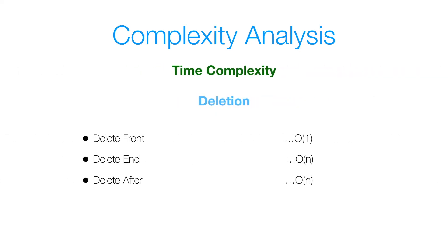For time complexity of deletion: deleting at the front is constant time — we just have head reference the next node. Deleting at the end requires traversing the entire list, so that's linear time. Deleting after a given node is also linear time in the worst case. For space complexity of deletion: deleting at the front, end, or after a given node all use no extra space, so all three are constant space operations.